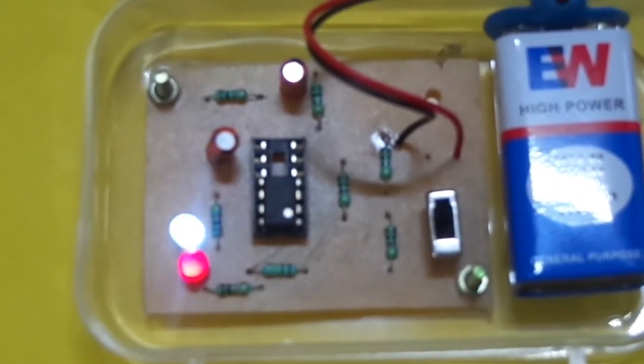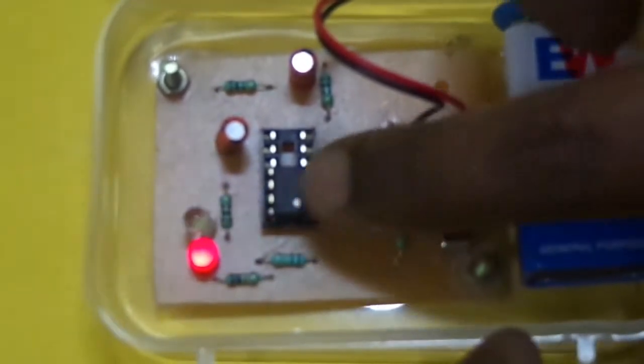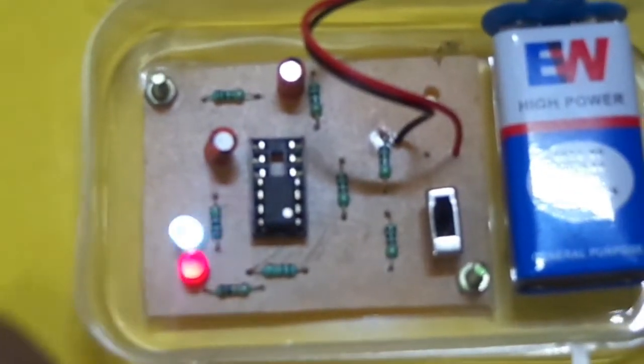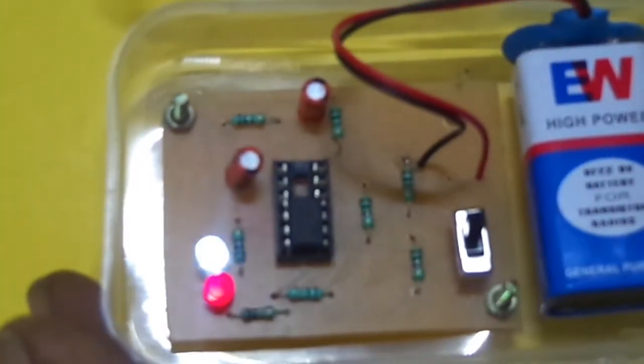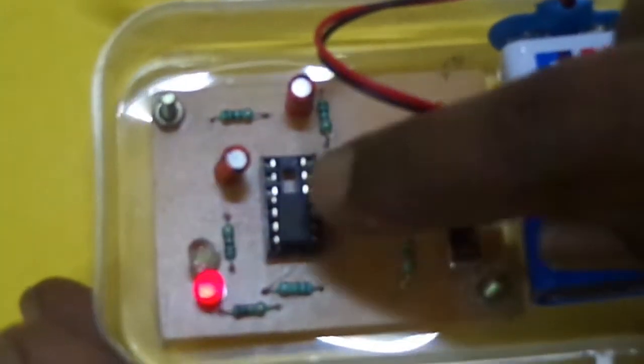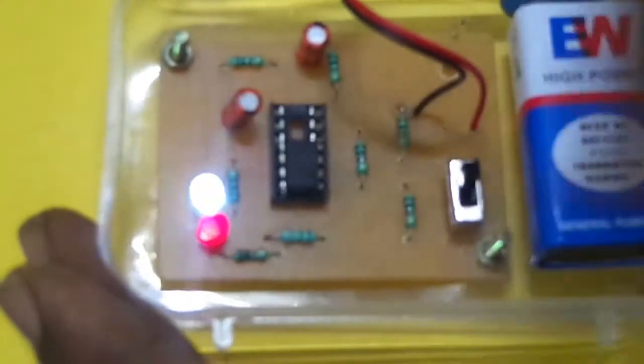If the IC is in good condition, you can observe the LED blinking continuously. If the IC is in bad condition, the LED will be in off condition or it will be continuously on.